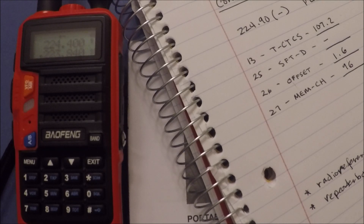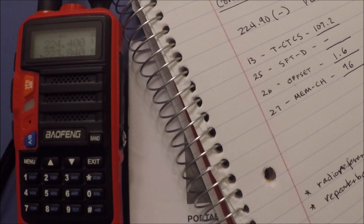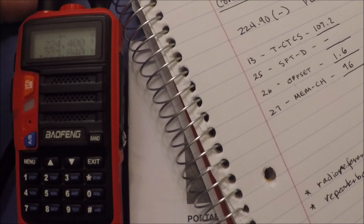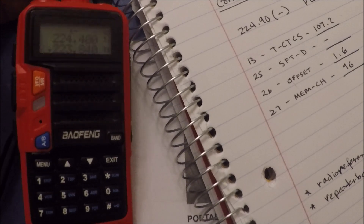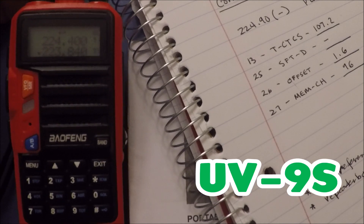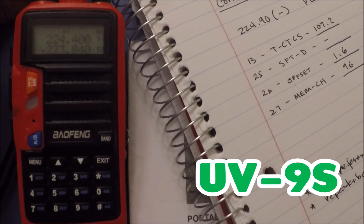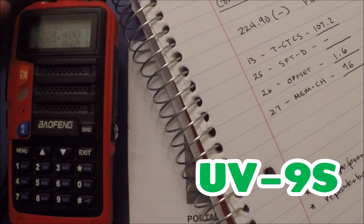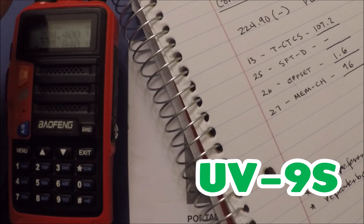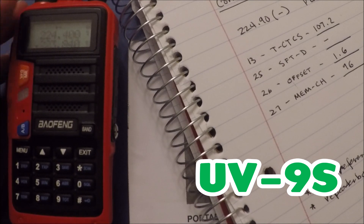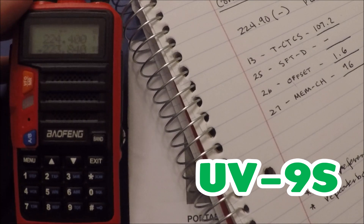Hello everybody, this is KB8UIP Brian, and today we'll be programming the Baofeng UV-9 Alpha, or 9A. It's a nice little radio — it's tri-band — and specifically we're going to program some of the 1.25 meter channel settings.